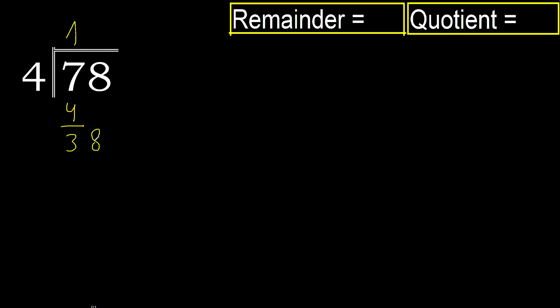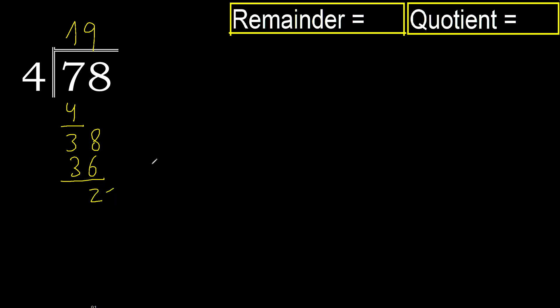Next, bring down 8 to get 38. 4 multiplied by 9 is 36, which is not greater. 38 minus 36 is 2. Next, there is no more digit, therefore finish.